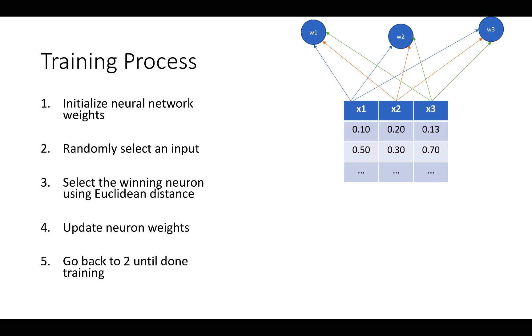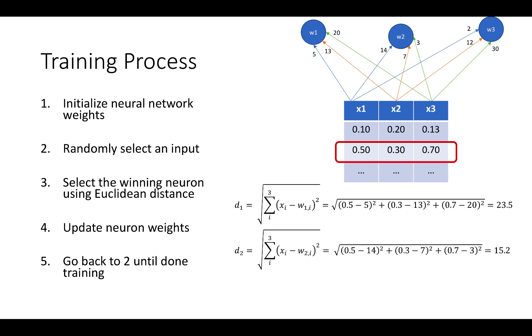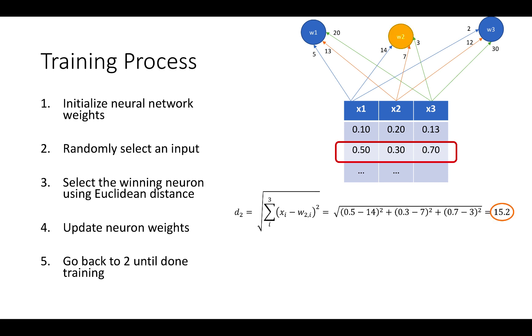The training process can be simplified into five steps. First, you initialize the neural network with random weights, and then randomly select an input, and then you select the winning neuron using the Euclidean distance. There are other distance metrics, but the Euclidean distance is a simple one, and we can use this equation here to calculate it. We will calculate the Euclidean distance for each neuron. The first neuron had 23.5, the second is 15.2, and the third is 31.6. We will decide what the winning neuron is by picking the one with the smallest Euclidean distance, and that will be neuron 2. We have a winner.